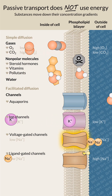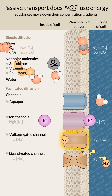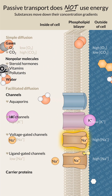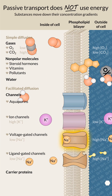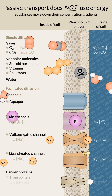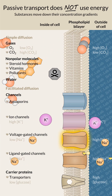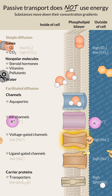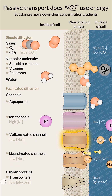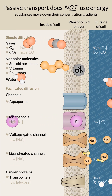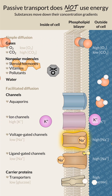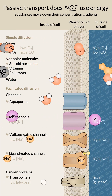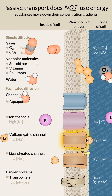Another class of proteins for facilitated diffusion is carrier proteins, also called transporters. They open and close randomly toward the inside and outside of the cell. For example, glucose molecules are too big and polar to cross the membrane on their own and use glucose transporters.